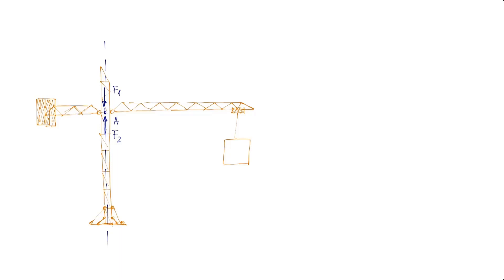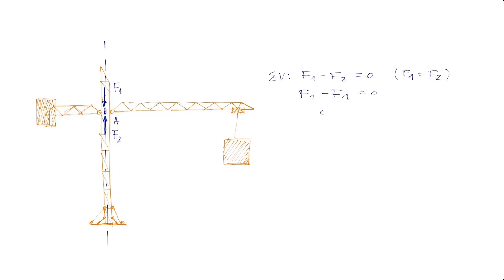But how do we prove this relation? For this, we carry out the first equilibrium condition — it is the sum of all forces. We assume that F1 and F2 are equal. As already mentioned in the previous tutorials, the vertical force downwards is defined as positive. Therefore, the equation F1 minus F2 is zero, and the sum of all forces is thus equal to zero.